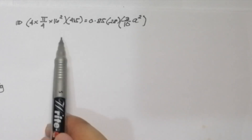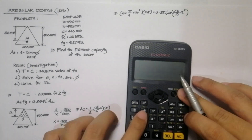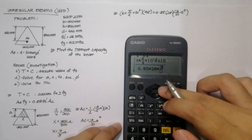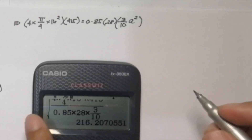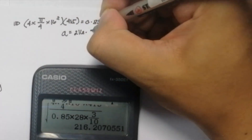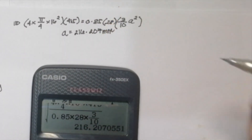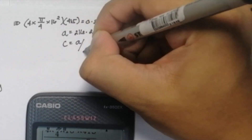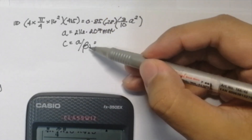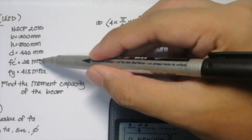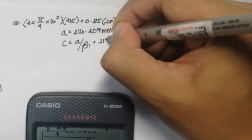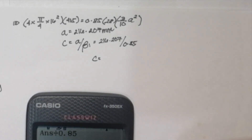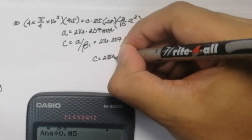Solving for A, we get A = 216.207mm, which is the depth of the compression block. Next, we solve for the value of C using C = A/β₁. Our β₁ = 0.85 since fc' = 28MPa. Dividing by 0.85, we get C = 254.361mm.